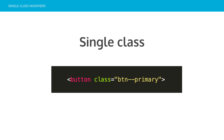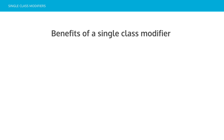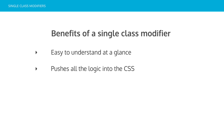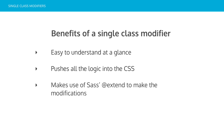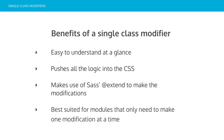So look at the single class approach: it's just one class and it wraps all the logic and modifications into a single class. A button-primary: we want it to be big and green and look great. The benefits: it's easy to understand at a glance what's happening, it puts all the logic into the CSS, so if you don't like CSS this is good for you. It makes use of Sass extends if you use Sass. I'm aware there are a lot of new techniques that have come out in the last year which sort of make this redundant, but not everyone can use those, so it is still here to stay. It's best suited for modules that only need to make one modification at a time.